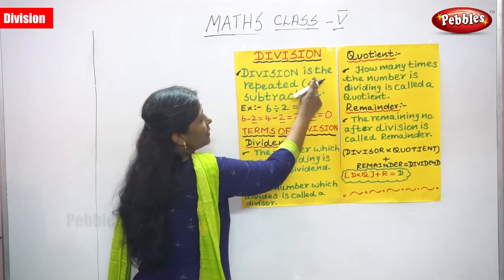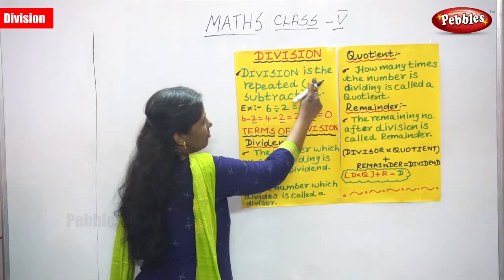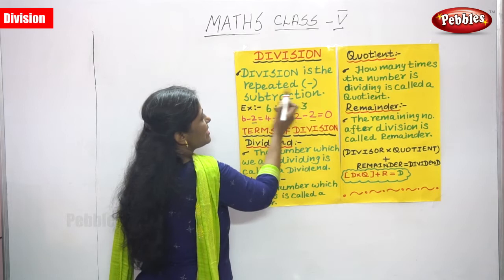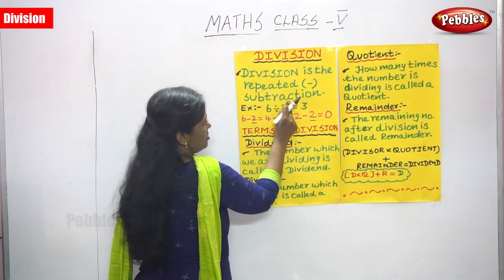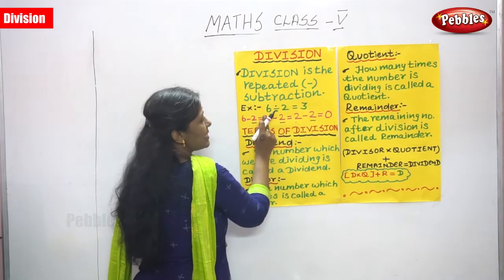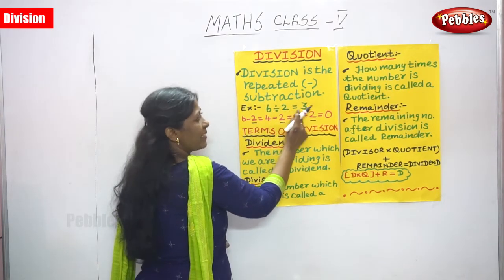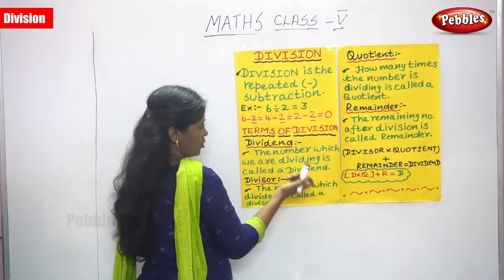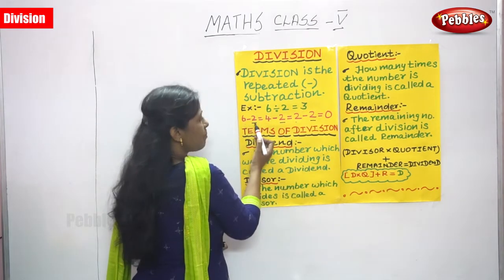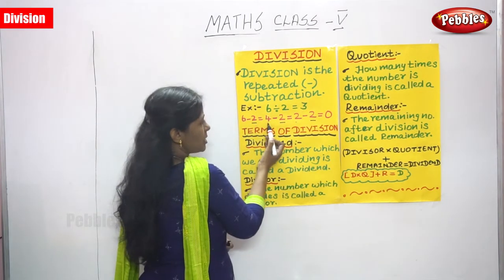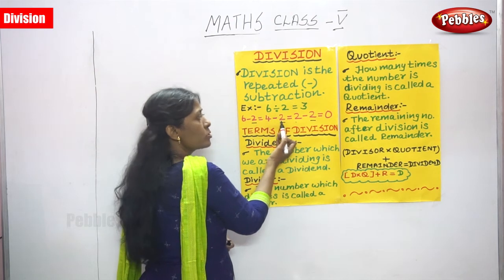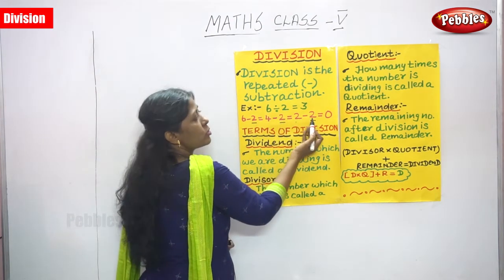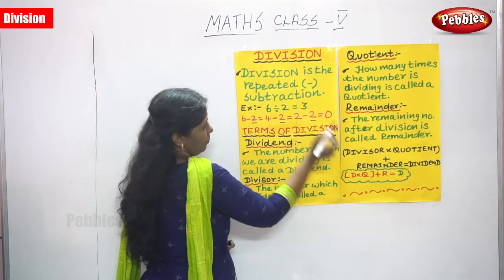So, 3 times it comes, the answer is also 3. That is what the definition says: division is the repeated subtraction. 6 divided by 2, we will get 3. While you go for the subtraction: 6 minus 2 is equal to 4, 4 minus 2 is equal to 2, and 2 minus 2 is equal to 0.